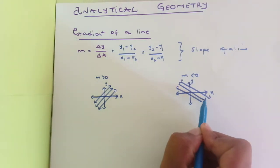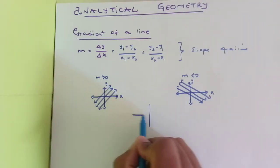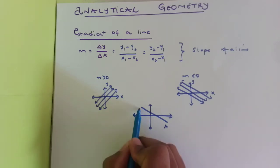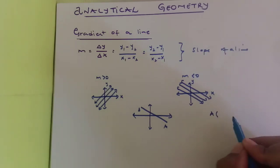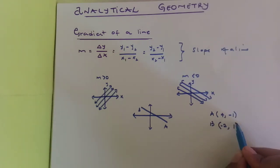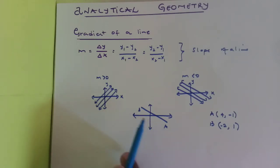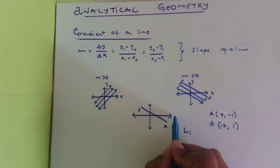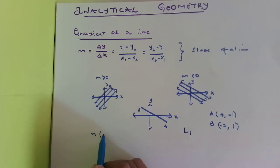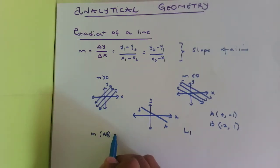Let's say we have a line with point A at coordinates (4, -1) and point B at coordinates (-2, 1). We'll call this line L1. This is the x-axis and the y-axis. You are asked to find the slope or the gradient of this line. So the gradient of line AB, or gradient of L1, equals the change in y divided by the change in x.